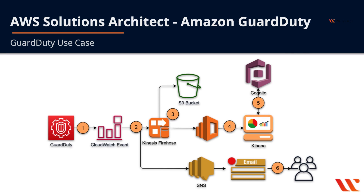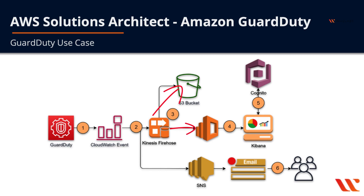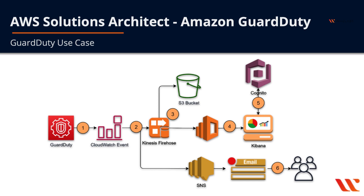In step one, GuardDuty is enabled and begins monitoring CloudTrail logs, VPC flow logs, and DNS query logs. If a threat is detected, GuardDuty forwards a finding to CloudWatch events. In step two, we define two targets in our CloudWatch events rule: the first target is a Kinesis Firehose stream for delivery into an Elasticsearch domain and an S3 bucket, and the second target is an SNS topic for email or SMS notification of findings.